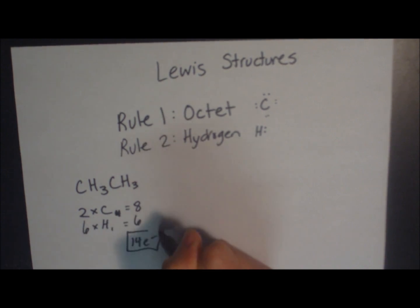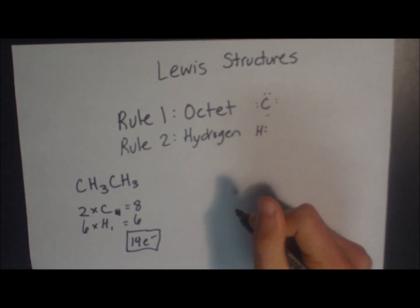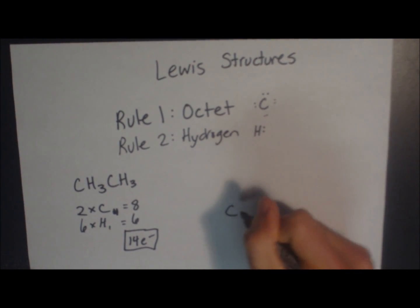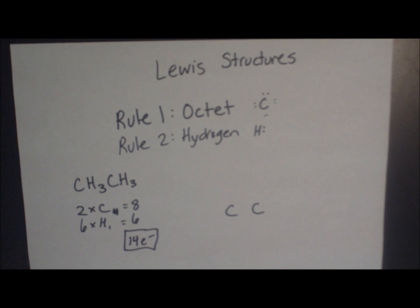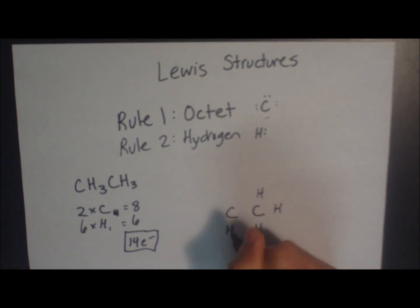Now, this is the total number that we need to use, no more, no less. So what we're going to do is we're going to draw a skeleton diagram with the two carbons in the middle, and each carbon has three hydrogens, and no electrons are drawn in.